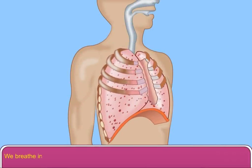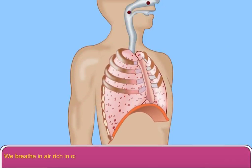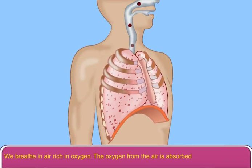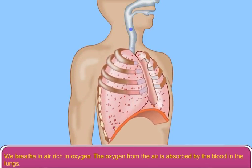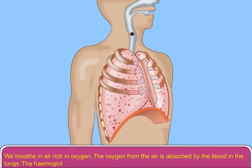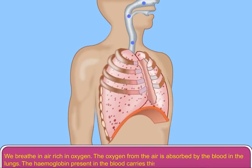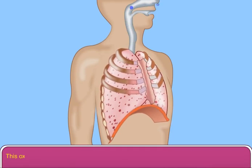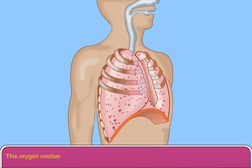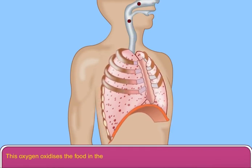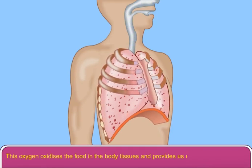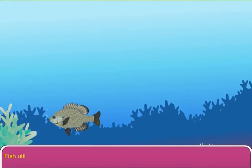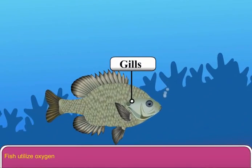We breathe in air rich in oxygen. The oxygen from the air is absorbed by the blood in the lungs. The hemoglobin present in the blood carries this oxygen to all parts of the body. This oxygen oxidizes the food in the body tissues and provides us energy to do work.